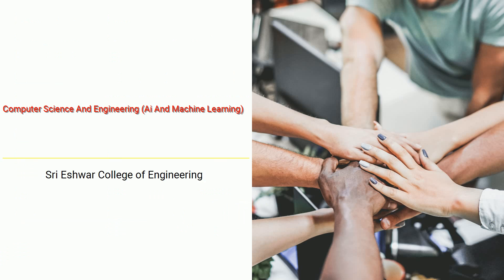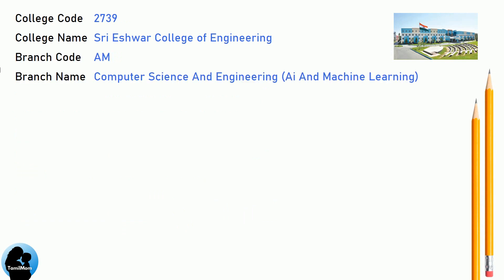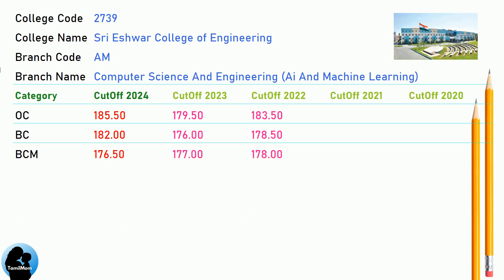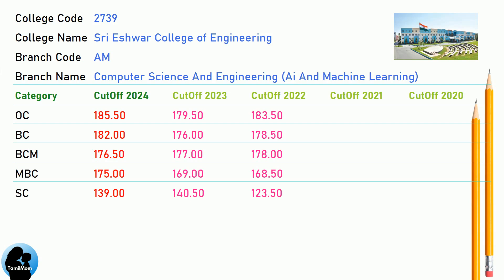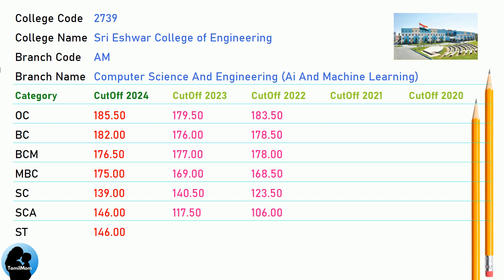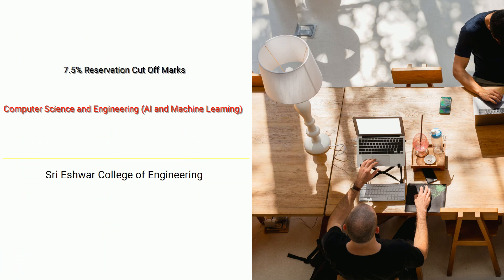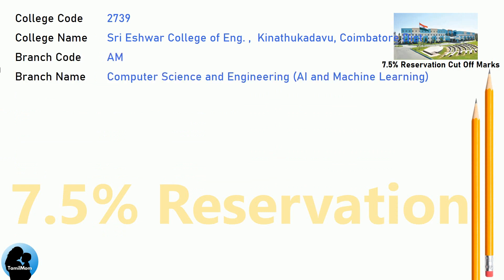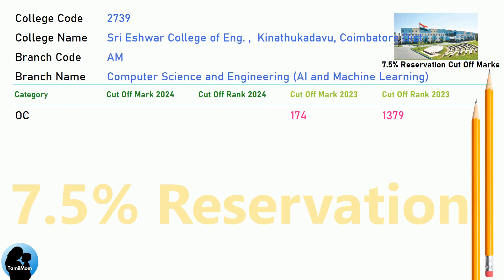DNA Cut-Off for Shri Aishwara College of Engineering in Computer Science and Engineering, AI and Machine Learning. DNA 7.5 Reservation Cut-Off for Shri Aishwara College of Engineering in Computer Science and Engineering, AI and Machine Learning.